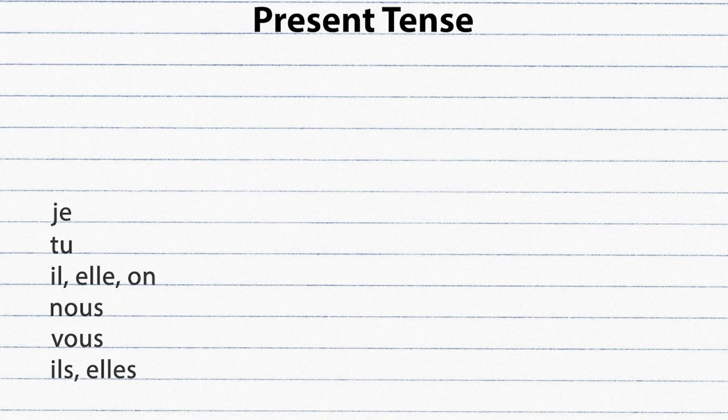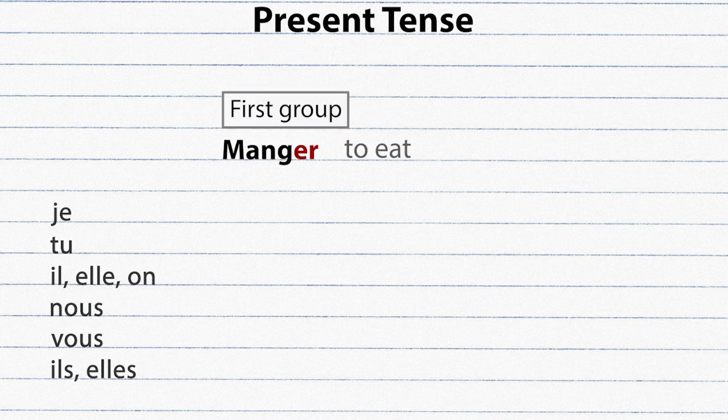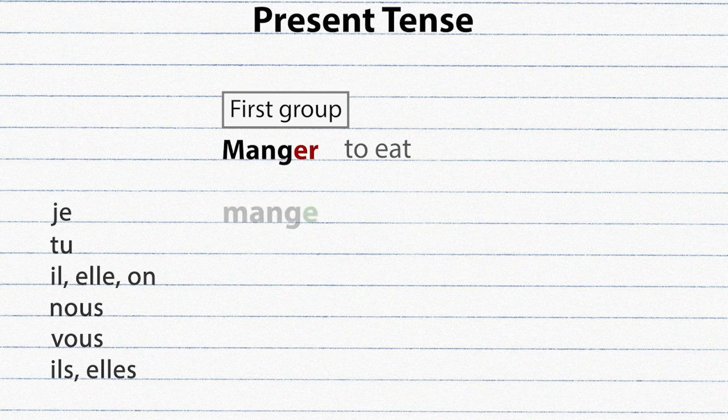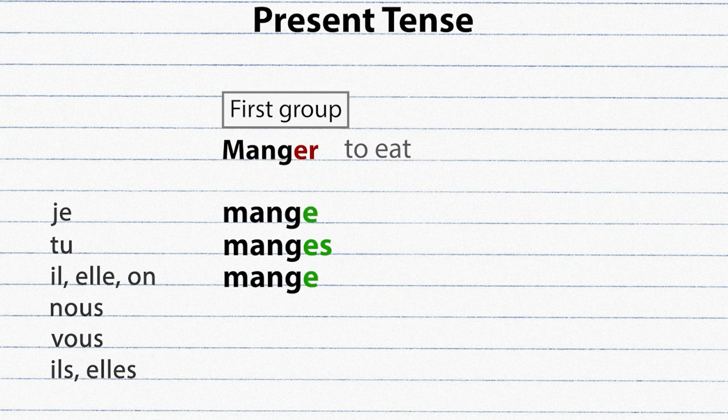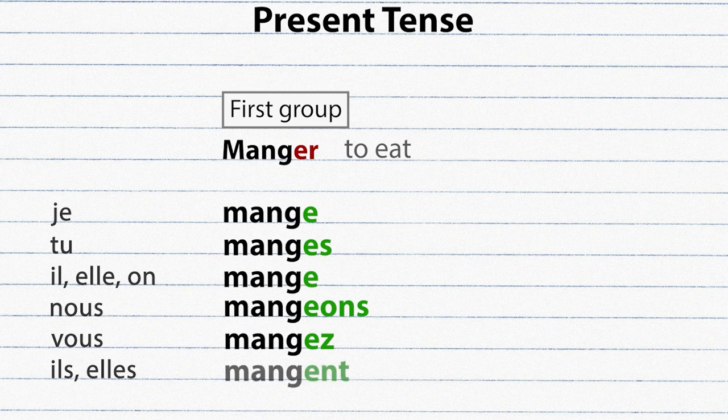Present tense. Here is a conjugation for the present tense. Manger. Je mange, tu manges, il mange, elle mange, on mange, nous mangeons, vous mangez, ils mangent, elles mangent.